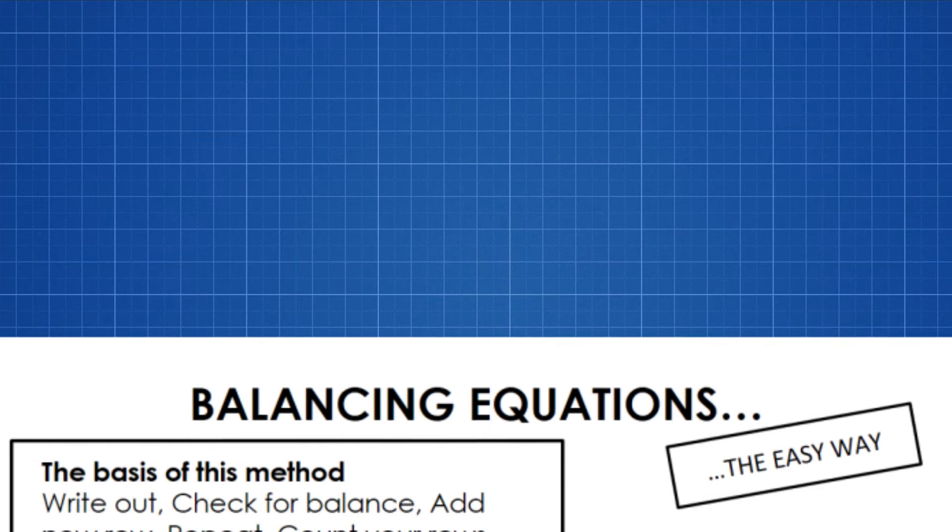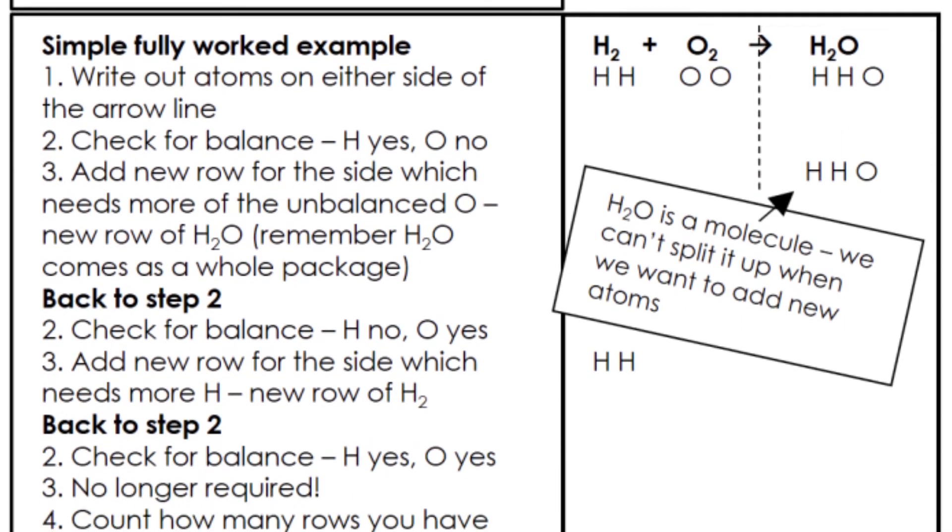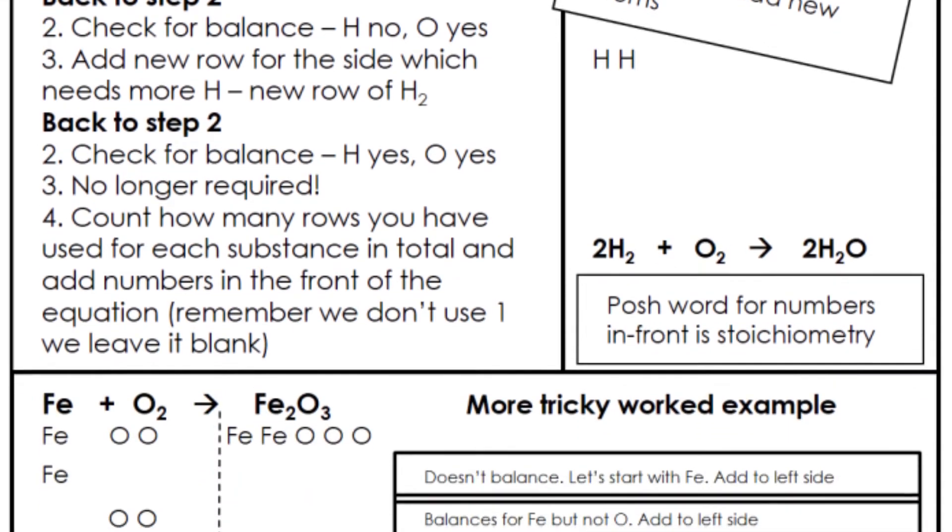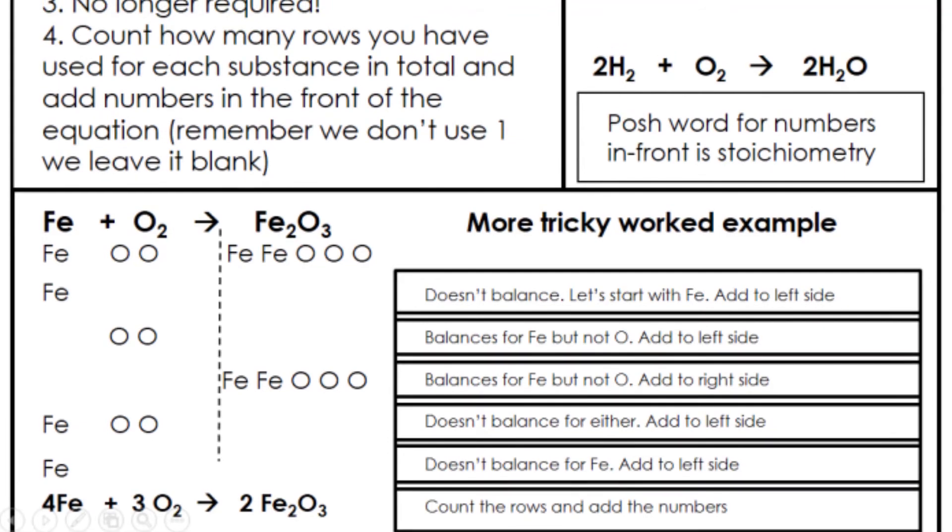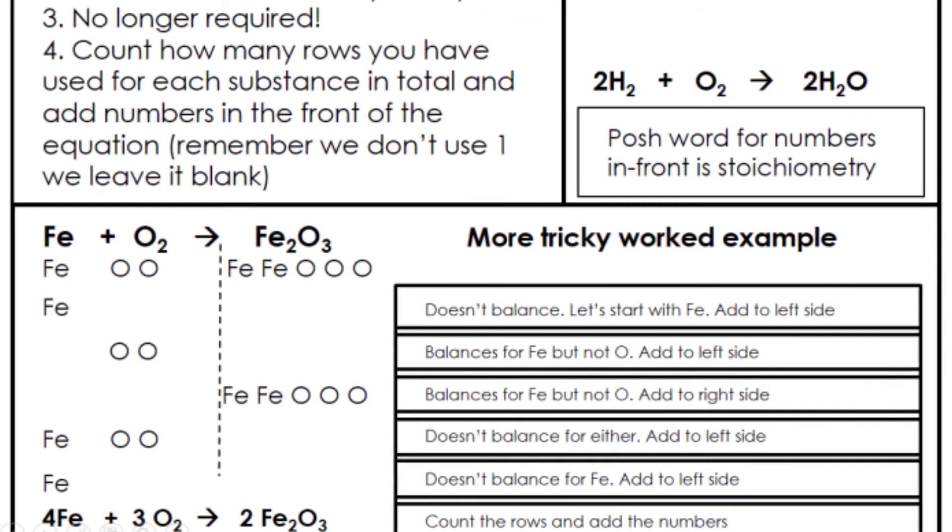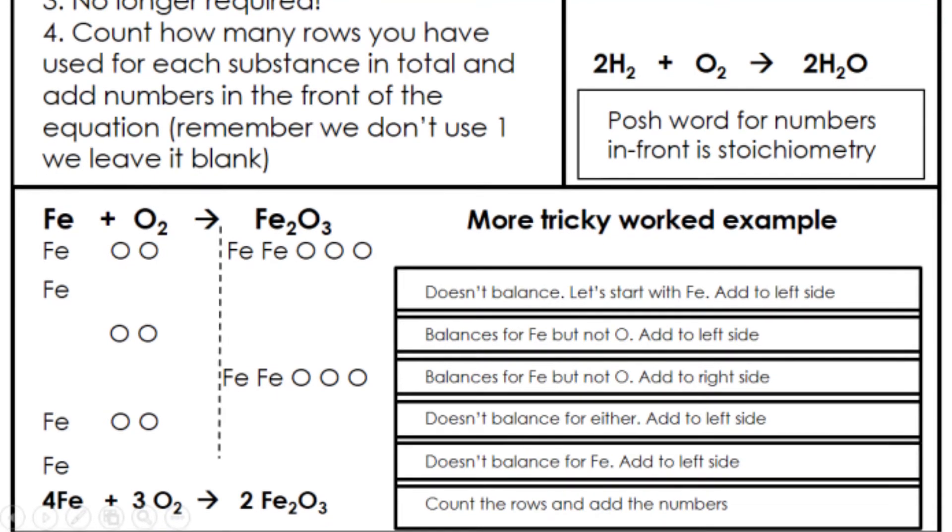Let's look back again at the worksheet that accompanies this video. The first example on the worksheet was the first one that I went through on the video. The reaction of hydrogen and oxygen to produce water. If you go a little bit further down, you'll see a more tricky worked example. I want you to go through this and follow the steps that I've written and make sure you end up with the same answer as we've got on the left hand side.